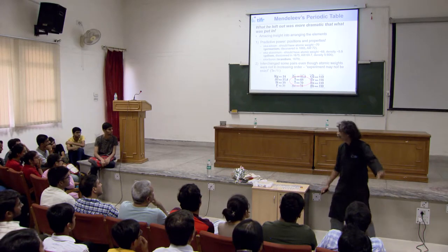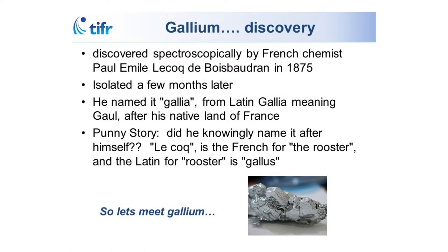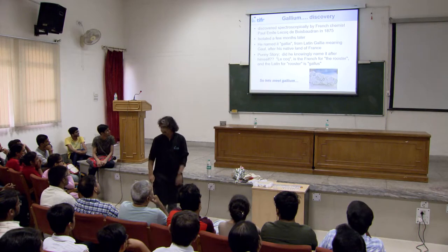Mendeleev didn't get everything right — for example he puts uranium in the aluminum column. Gallium is an interesting case. It was discovered by a French scientist who calls it Gallia after Gaul — France — but also very cleverly names it after himself. His name was Lecoq. Lecoq is the French for the rooster, and the Latin for rooster is Gallus — hence Gallium. A very smart guy.